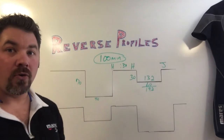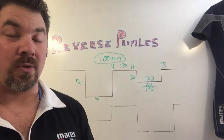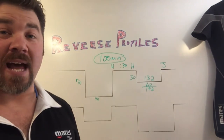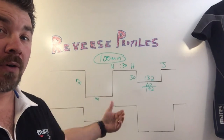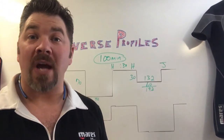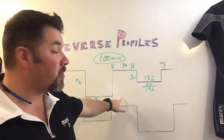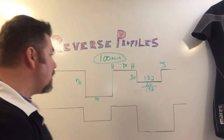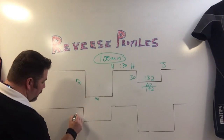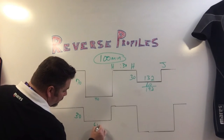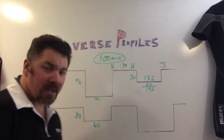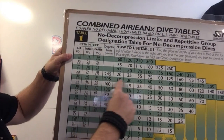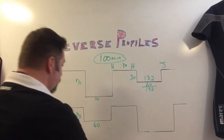That's 100 minutes total for those two dives. Now let's do the exact same two dives in a reverse profile. We're going to use the same 30-minute surface interval — the same amount of time it takes to get from dive site A to dive site B. So all I do is reverse the profiles: I'm going to start with a 30-foot dive for 60 minutes. Finding 30 feet and going over to 60 minutes gives me pressure group D.